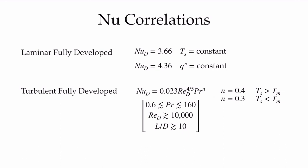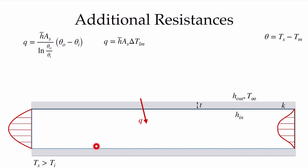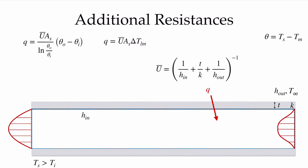Now consider what happens with additional resistances — for example, a layer of insulation on the pipe, or heat transfer through the pipe wall thickness. If we have a constant ambient temperature outside with a known external convection coefficient (perhaps calculated from flow over a cylinder), we can replace our average convection coefficient h-bar with an overall heat transfer coefficient U-bar, and use the log mean temperature difference approach to calculate the total heat transfer rate.